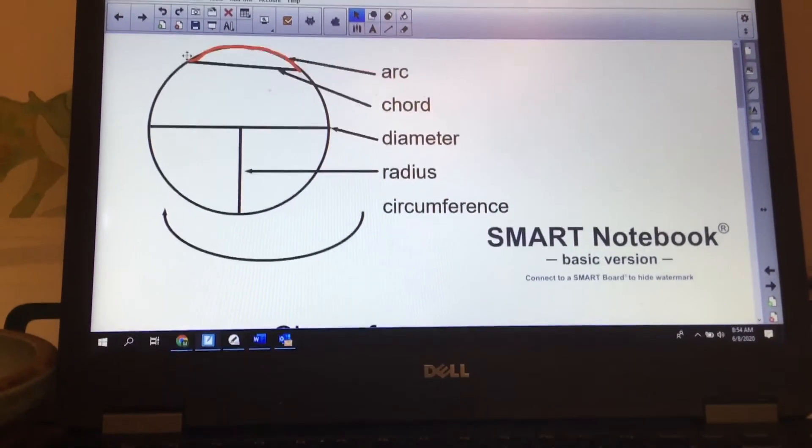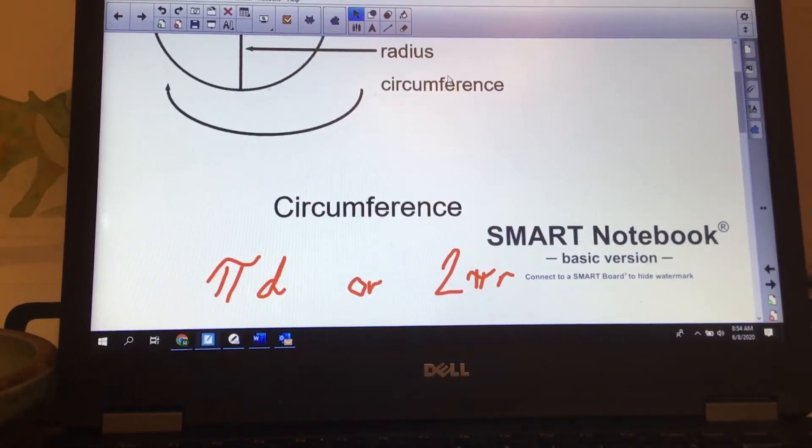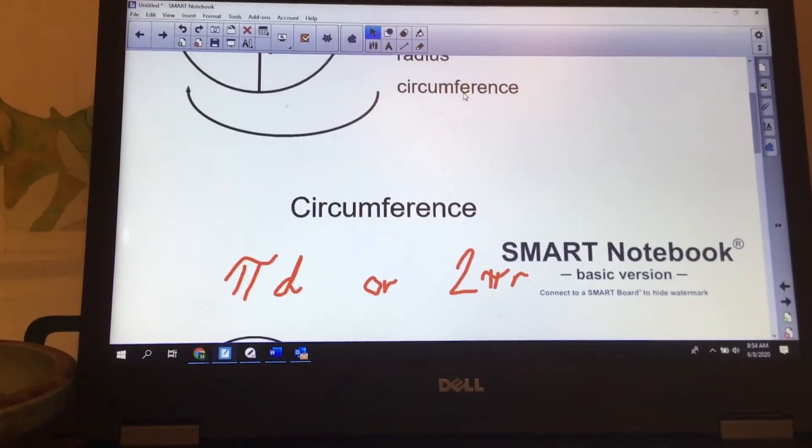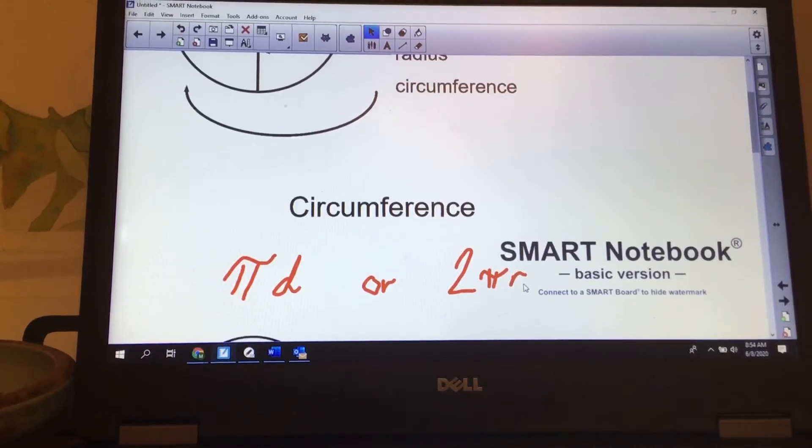For circumference, we have two formulas: pi times diameter or 2πr, which is 2 times pi times radius.